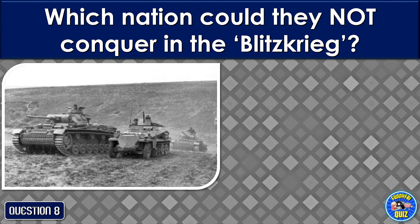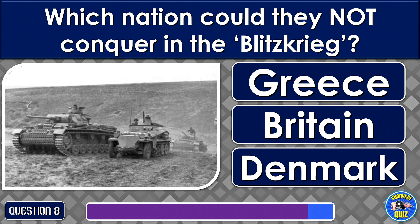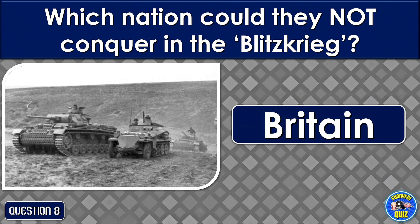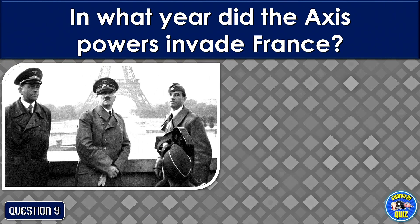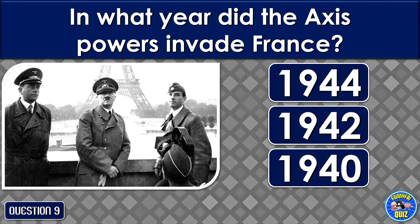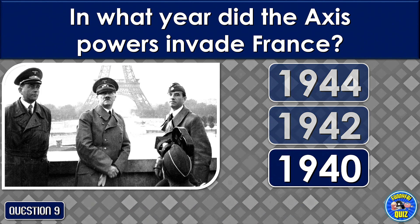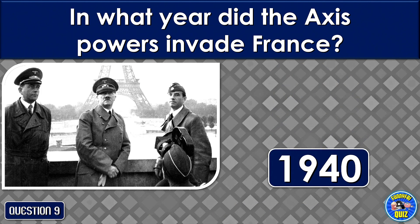Which nation could they not conquer in the Blitzkrieg? Britain. In what year did the Axis powers invade France? In 1940.